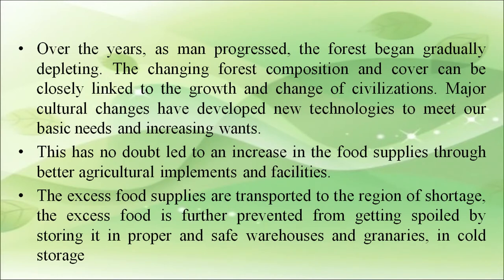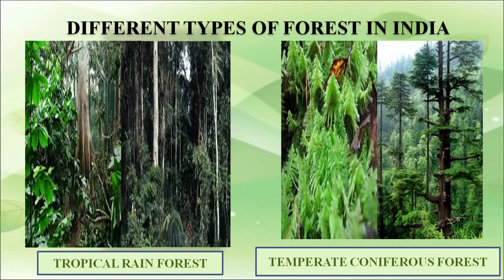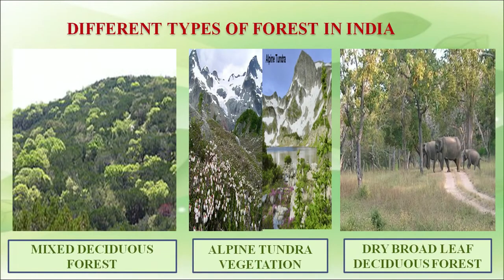Major cultural changes have developed new technologies to meet our basic needs and increasing demands. This has led to an increase in food supply through better agricultural implements and facilities. Excess food supplies are transported to regions of shortage and further prevented from spoiling by storing in proper warehouses, granaries, and cold storage. Different types of forest include tropical rainforests, temperate rainforests, mixed deciduous forest, alpine tundra vegetation, and dry broadleaf forest. There is a variety of flora and fauna found in India.